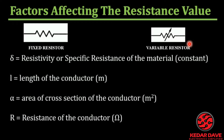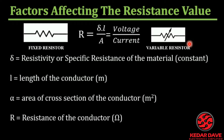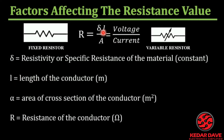To understand what the resistance depends on, we use the equation R equals rho times l divided by A. Here, rho is called resistivity or specific resistance of the material — it represents the friction the material offers for the flow of electrons. The second factor is the length of the conductor, which directly affects the resistance value.